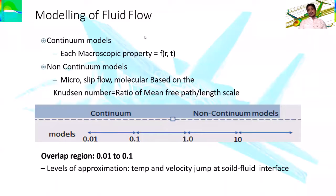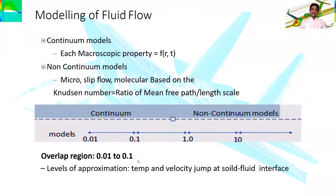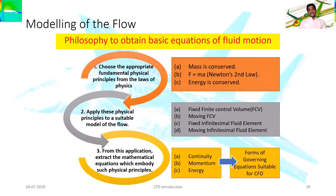The key requirement for this session is determining whether a fluid is continuum or non-continuum in nature. On the scale shown, there is an overlap region — approximately between Knudsen number values of 0.1 and 1.0 — where temperature and velocity jumps occur at the solid surface. Temperature plays a key role in making a fluid continuum or non-continuum.